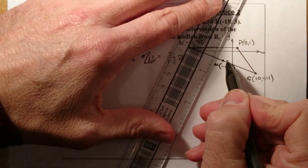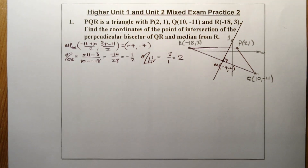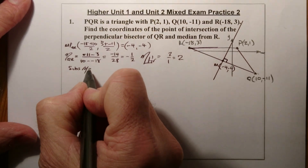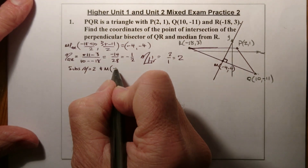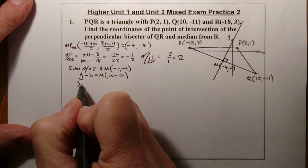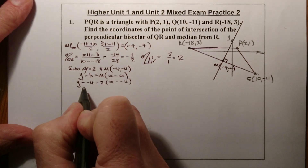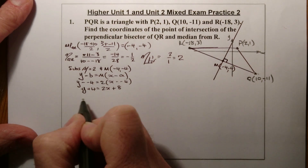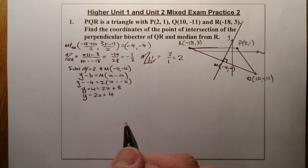So I'll draw in the perpendicular bisector coming through the midpoint. To find its equation I substitute the gradient of 2 and the midpoint (-4, -4) into y - b = m(x - a). That gives y + 4 = 2(x + 4), which expands to y + 4 = 2x + 8. Rearranging: y - 2x = 4.